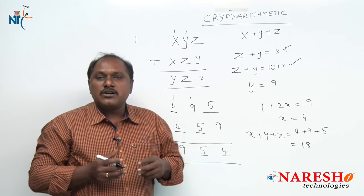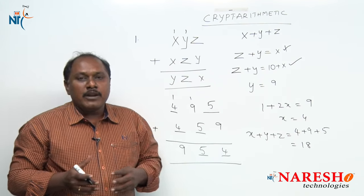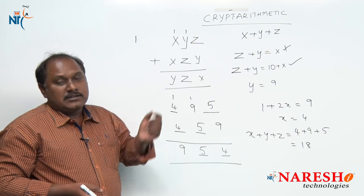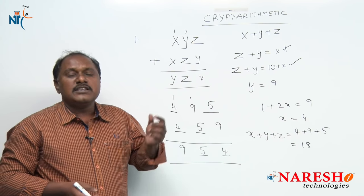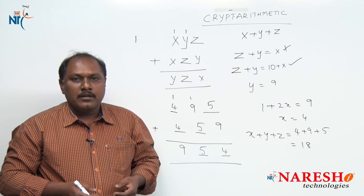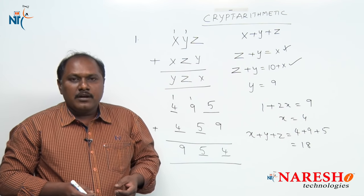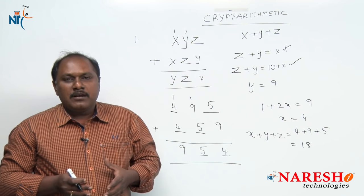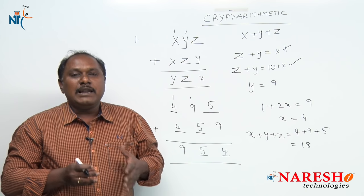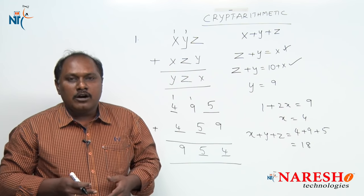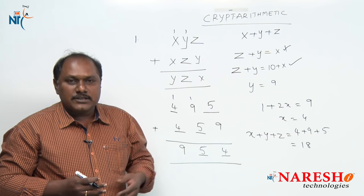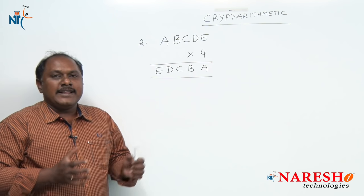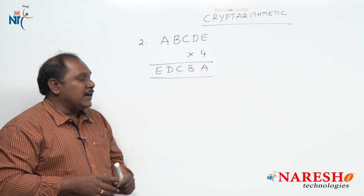This is how we solve problems in Cryptarithmetic when we have additions. This was a basic example. Now let us take another example where multiplication is involved. Let us move to the next question in Cryptarithmetic.